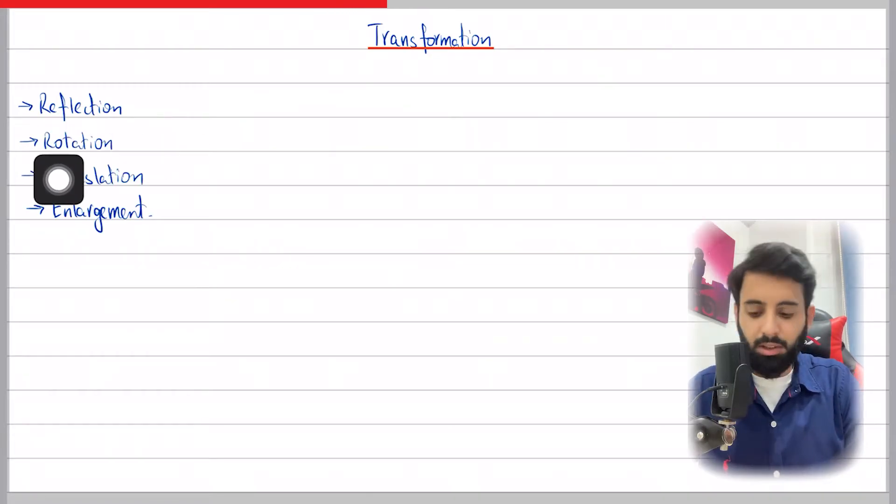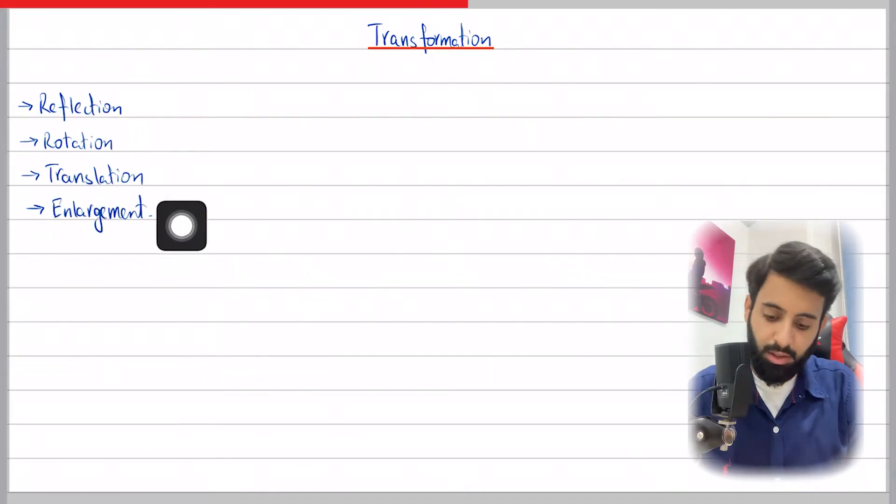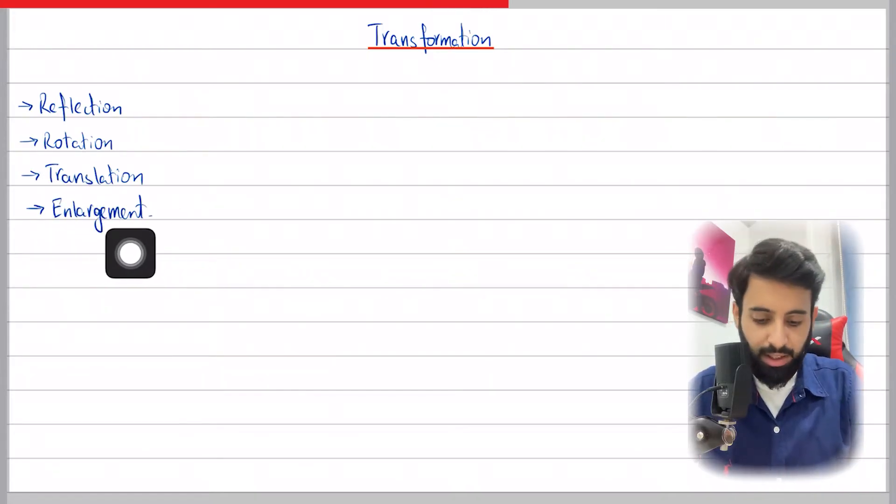One is reflection, very easy. Rotation, slightly tricky. Translation, very easy. And enlargement, which again can be slightly tricky.